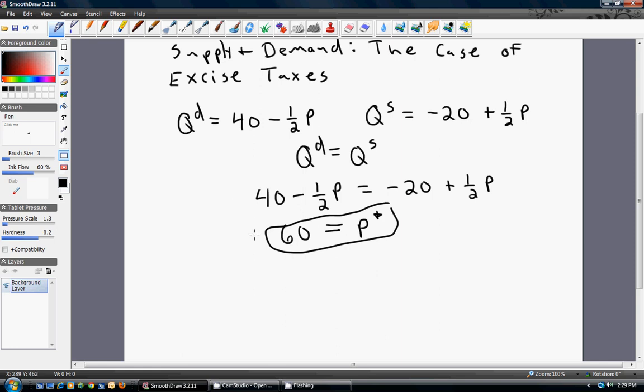The equilibrium quantity is found by taking the 60 dollars and plugging it back into the P term in either the demand or supply equation. So go ahead and doing that, 40 minus one half P, while P is as we determined 60.